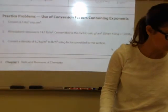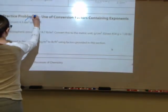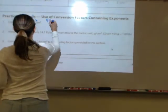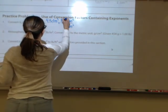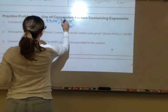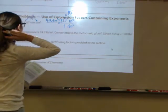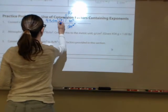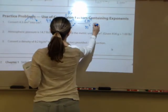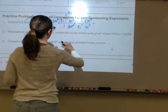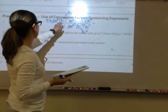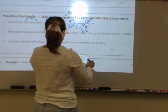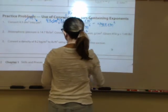Practice problem one: convert 4.3 decimeters cubed into centimeters cubed — this is a two-step metric conversion. Take 4.3 decimeters cubed; convert to meters cubed: one next to the prefix deci, deci is 10⁻¹, cube that to get 10⁻³. Then convert meters cubed to centimeters cubed: one next to centi, centi is 10⁻², cube that to get 10⁻⁶. Calculator: 4.3 × 2nd EE negative 3 ÷ 2nd EE negative 6 = 4,300 centimeters cubed. Two sig figs.